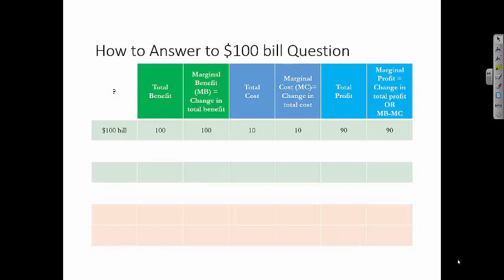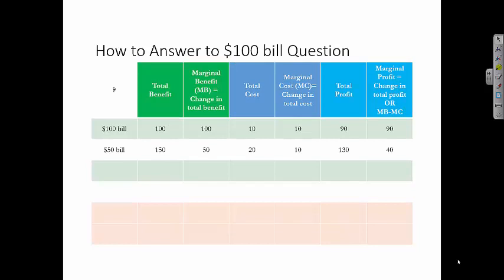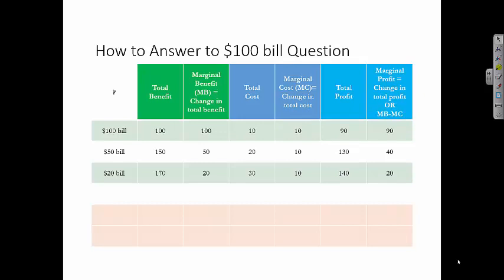Ask students to raise their hand if they will pick up the $50 bill, then anyone who won't. The marginal benefit of picking up the $50 is $50, making total benefit $150. Marginal cost is another $10, so total cost is now $20. Marginal profit is marginal benefit minus marginal cost, so $40, making total profit $130. Marginal benefit is greater than marginal cost — pick it up. For the $20 bill: marginal benefit is $20, making total benefit $170. Marginal cost is another $10, making total cost $30. Marginal profit is $10, making total profit $140. Because marginal benefit is greater than marginal cost, total profit increases — pick up the bill.